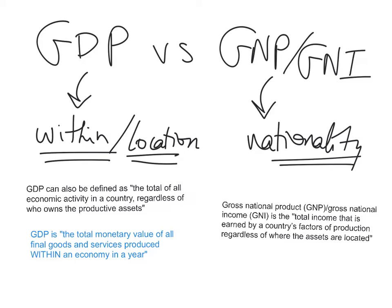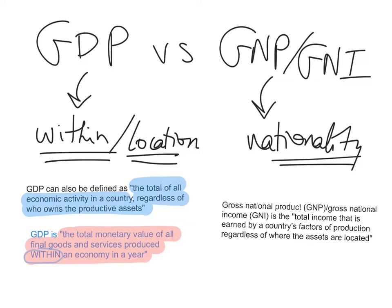In the previous video in the series, we defined GDP as the total monetary value of all final goods and services produced within an economy in a year. Notice I capitalized 'within,' and this is where the distinction between GDP and GNP or GNI comes. GDP can be defined as the total of all economic activity in a country, regardless of who owns the productive assets. It is based on location — if the economic activity is within the borders of the country, it is counted in the country's GDP.